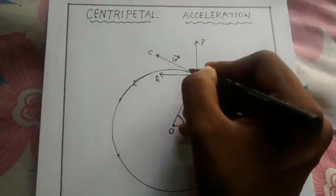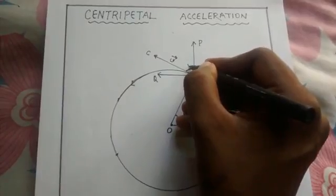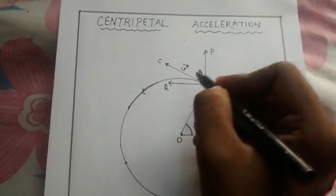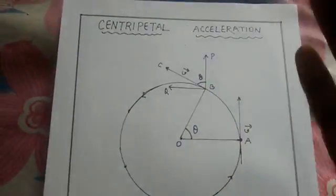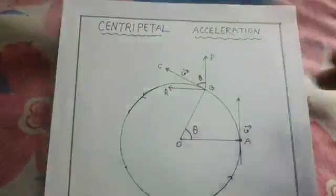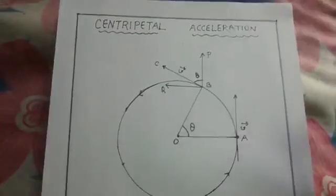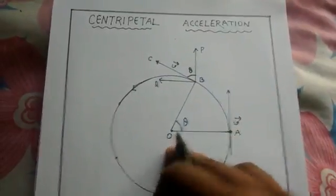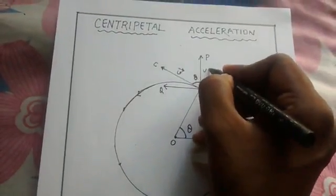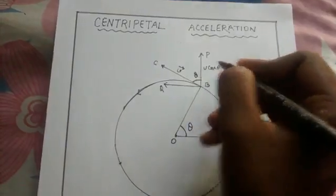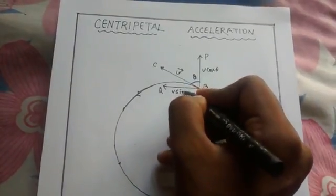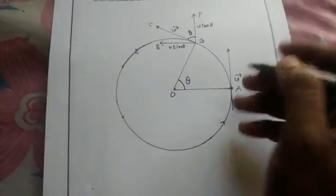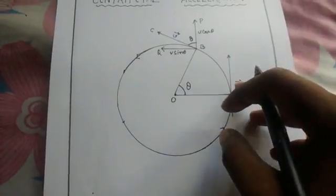From geometry you will find that this angle is theta. Now on resolving the velocity into two components — one towards the vertical direction and the other towards the horizontal direction, that is towards AO (since BQ is parallel to AO) — you will get one component as v cos theta and the other as v sin theta.